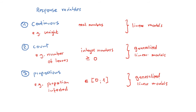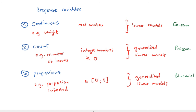Actually, even continuous data can be analyzed using a generalized linear model with a so-called Gaussian distribution — we'll encounter that much later in the course. For now, let's keep in mind: when you do a generalized linear model with these three different types of response variables, you should use a Gaussian family for continuous variables, a Poisson family for count data, and a binomial family for proportion data.